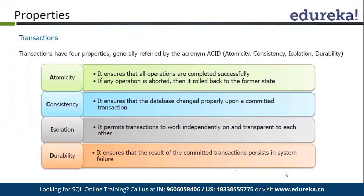Next is Isolation. Isolation simply means that each transaction is independent of other transactions. No transaction can overlap with any of the other transactions, so it is isolated. Durability simply means once all the transactions are executed and we have committed them using the commit keyword, all the results will be committed and will remain permanently in our database server. This is called durability.